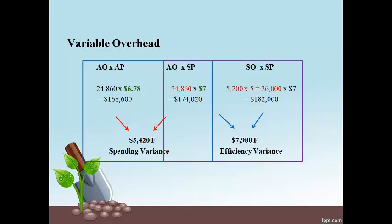On the right side is the cost difference because a different quantity of labor hours was worked. The company expected to use 26,000 direct labor hours to make 5,200 units of product. The fact that the company actually used 24,860 hours saved the company $7 for each of the 1,140 hours not used, for a total of $7,980. The company spent less per hour and used fewer hours in total, incurring less than expected variable manufacturing overhead.